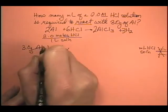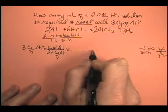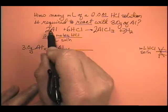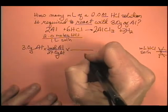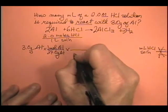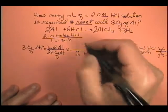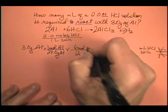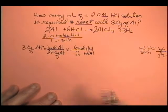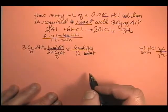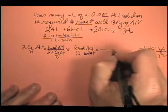Now I got it into moles. If I cancel my grams of aluminum, now I'm ready for my mole-to-mole ratio between aluminum and HCl. Now, so I know, remember I need moles of aluminum down here. So for every 2 moles of aluminum, I react with 6 moles of HCl. Boom, moles of aluminum cancel. We're out of aluminum into HCl. Well, now we're in business.